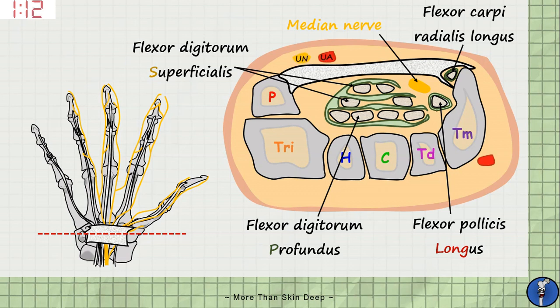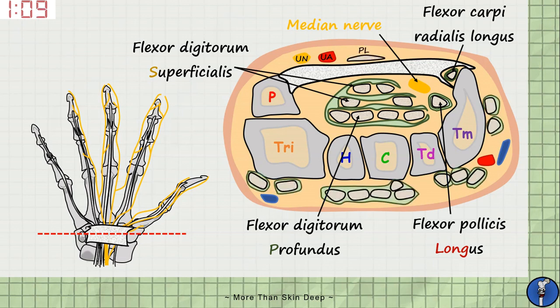Several structures pass in close proximity to the carpal tunnel, including the ulnar nerve and artery and the palmaris longus tendon, but these are beyond the scope of this quick session.